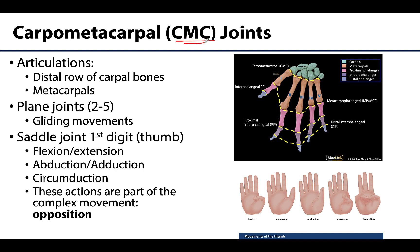These CMC joints are formed by the articulation between a carpal bone in the distal row and a metacarpal, so they are going to be located in this general region. There will be five CMC joints in all, one associated with each digit. Most of the carpometacarpal joints are plane joints — two through five will be plane joints — so there will only be gliding movements allowed at the CMC joints.